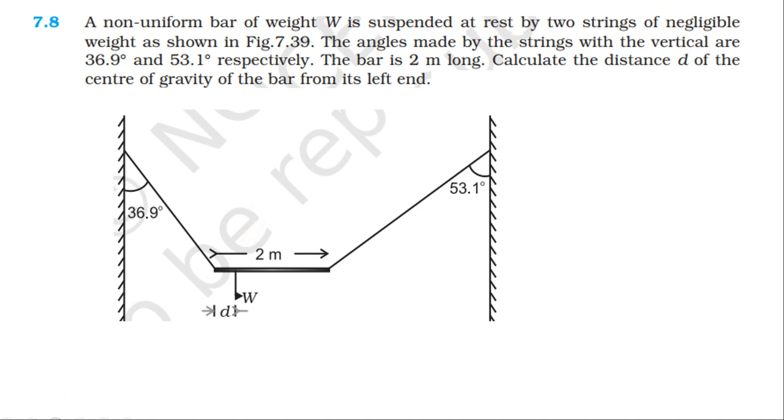Now, let's look at the forces acting on the rod. The weight W acts at the center of gravity G. The left end is A, right end is B. The distance from A to G is d, and the distance from G to B is 2 minus d.